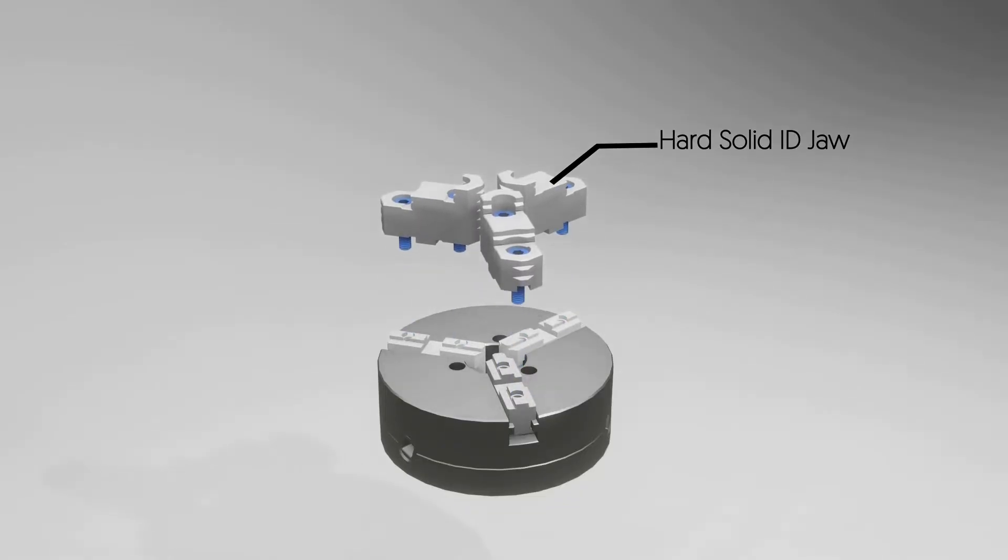Hard solid ID jaw: the purpose of this part is to hold the job or part tightly. It contains some grooves so that it can easily place and align in the body.